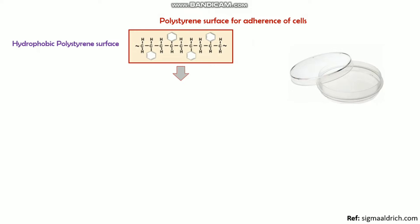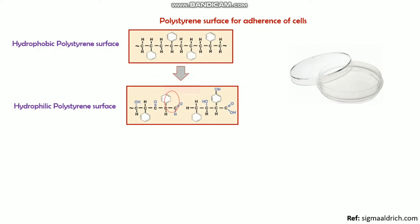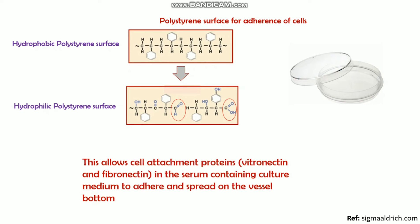The cell culture vessel we use usually has a polystyrene surface, and these polystyrene surfaces are hydrophilic, because hydrophilic polystyrene surfaces promote cell adherence to the bottom. This is why hydrophobic polystyrene surfaces can be converted to hydrophilic polystyrene surfaces by chemical modification. This hydrophilic polystyrene surface allows cell attachment proteins like vitronectin and fibronectin, present in the serum, to spread on the vessel bottom, and then cells can easily adhere to the bottom of the cell culture vessel.